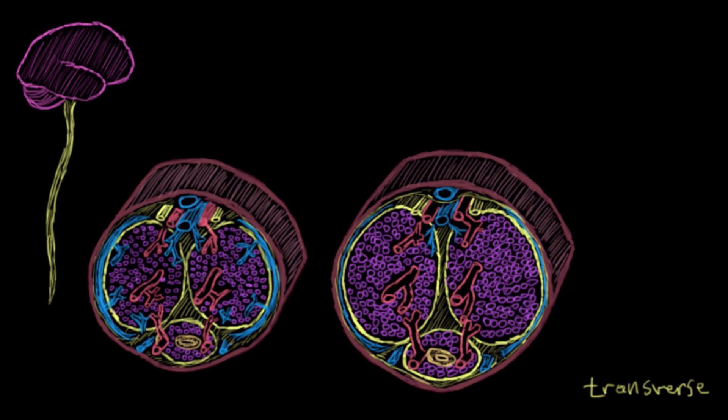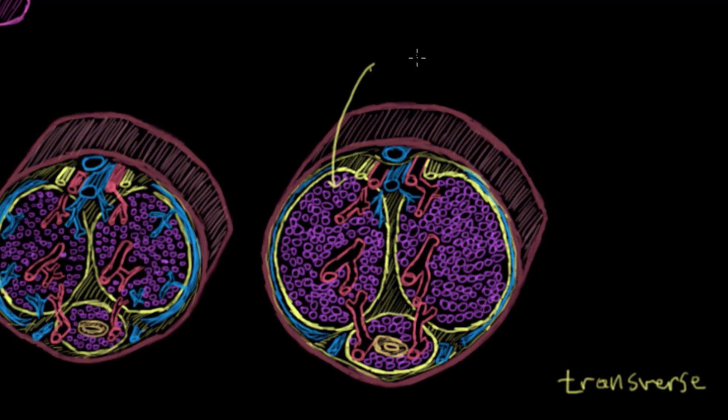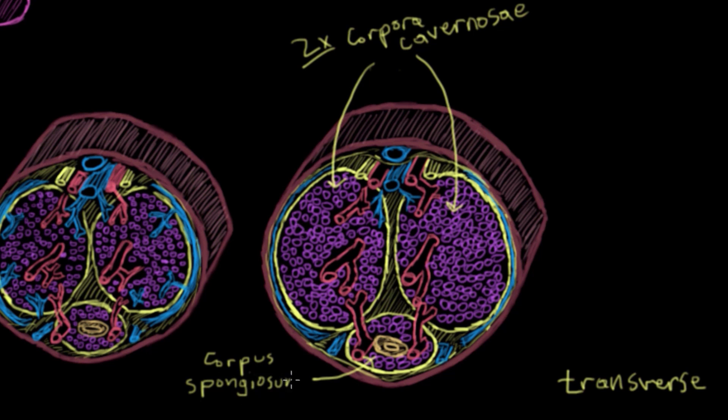In this view it's quite easy to see the three cylindrical vascular compartments that get filled with blood during an erection. These vascular compartments or chambers are called the corpora cavernosa. You have two of those, one on each side here. And the corpus spongiosum which you have down here.